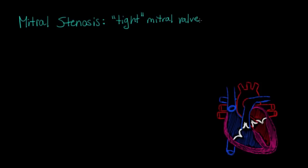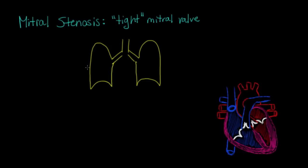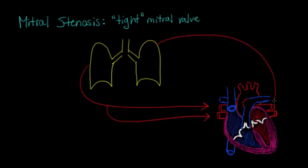I'm going to draw a little set of lungs here and briefly take you through how blood flows from the right heart through the lungs, and then from the lungs back to the left heart. Those arrows are going to the pulmonary veins, which go into the left atrium — marked here as LA — and then the left ventricle, LV. What I'm circling right now is the mitral valve.